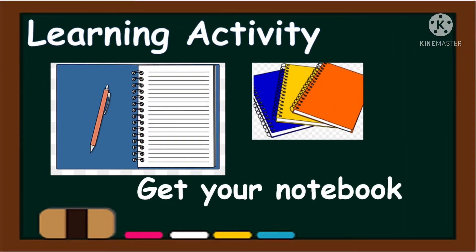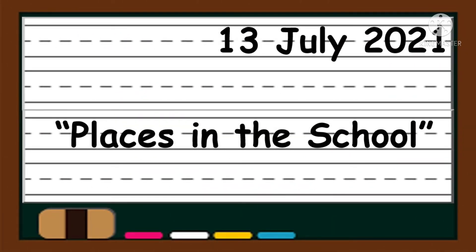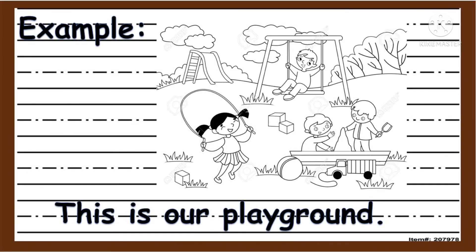For your learning activity, please get your notebook. Instruction: choose one place in the school that you like, then draw it and write the sentence. Don't forget to write the date — 13th of July 2021 — and the title, Places in the School. Example: if you like the playground, you can draw the playground and then write 'This is our playground.'